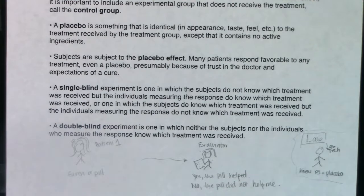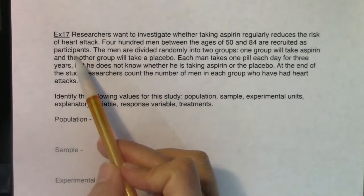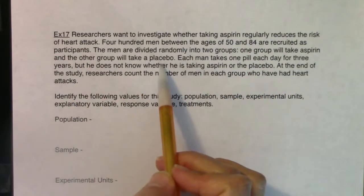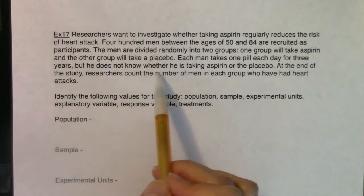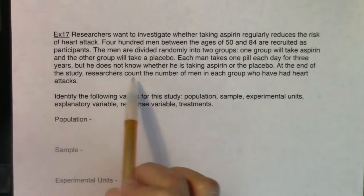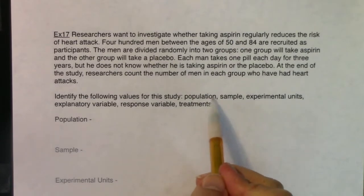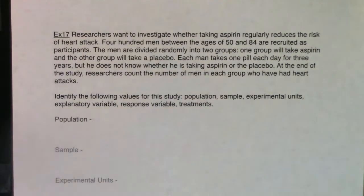Now let's apply all this vocab to an example. Researchers want to investigate whether taking aspirin regularly reduces the risk of heart attack. 400 men between the ages of 50 and 84 are recruited as participants. The men are divided randomly into two groups: one group will take the aspirin and the other will take the placebo. Each man takes one pill each day for three years but does not know whether he's taking the aspirin or the placebo. At the end, researchers count the number of men in each group who have had heart attacks.